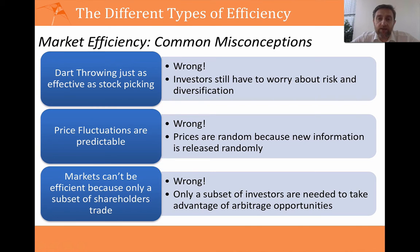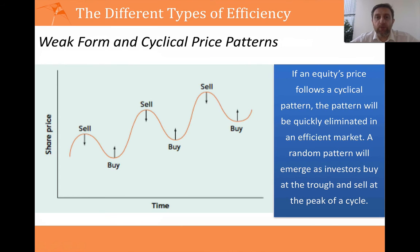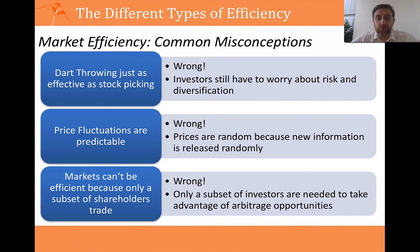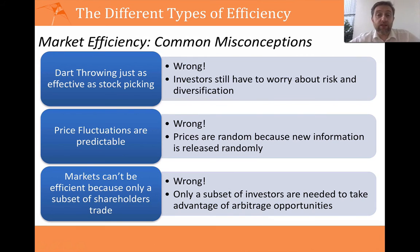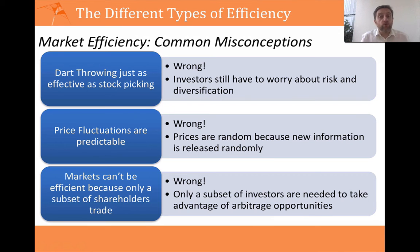The next misconception is: if you can't earn excess returns because you can't predict prices, and market efficiency says there are no patterns in prices — if there are no patterns, you can't predict prices, and then people might say that means the market is inefficient. If prices are just random, how can prices be random if the market is efficient? What we'd say is: let's take the case of semi-strong form efficiency. Semi-strong form efficiency says that prices incorporate all publicly available information, including past prices — so all of that publicly available information is already incorporated into a price.